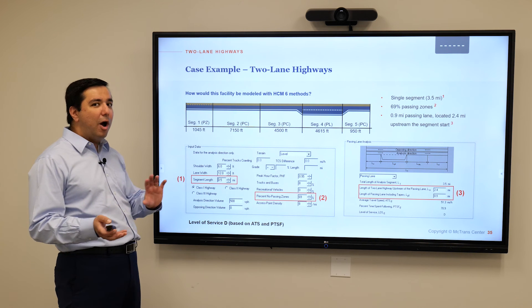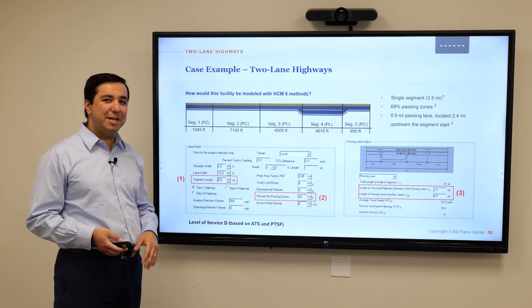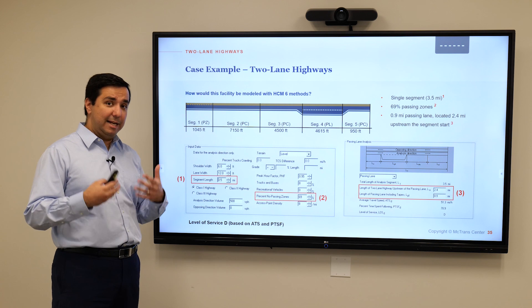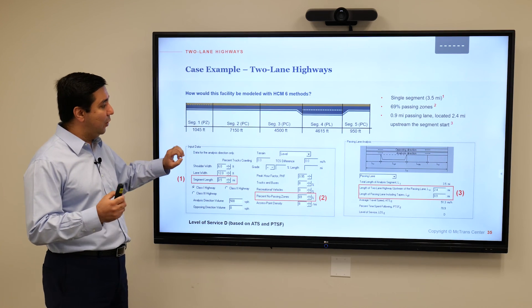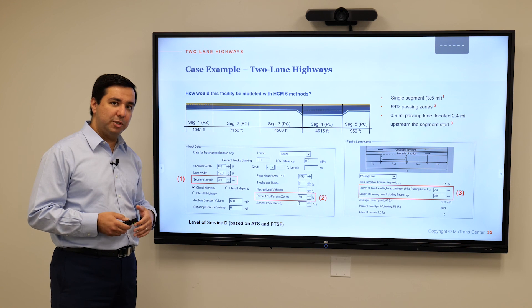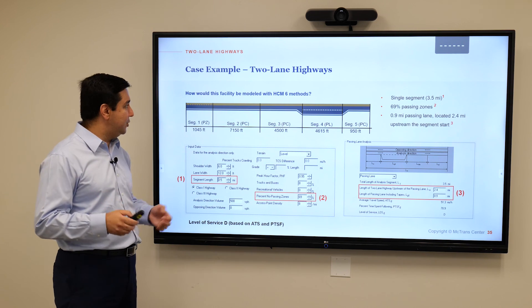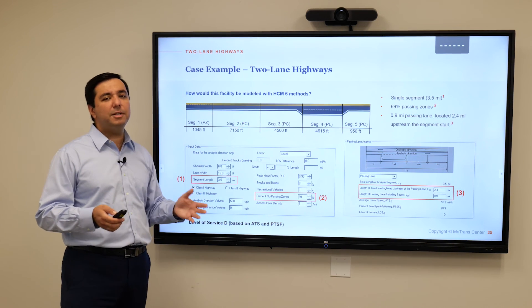Here I have a snapshot of how this analysis would have been done in the old methodology, just so you get a sense of how much cleaner and more accurate the new method is. If you needed to analyze this facility in the old HCM, you would have to consider it as one segment and then specify what percentage of that segment is passing zone, passing constraint, or passing lane. Based on that, the old methodology would try to estimate performance measures. What it would have generated was output across just one segment representing the entire facility, with very low resolution.